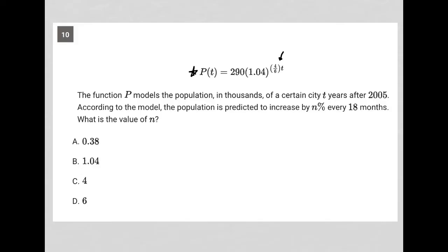Anytime I see a variable in the exponent, I think that I really want to know what does it mean when that variable is equal to zero? Like what does t equals zero really mean here? I always want to figure that out.